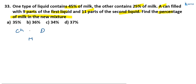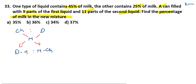Now, if you want the ratio between cheaper and dearer, that is: (dearer minus mean) is to (mean minus cheaper). This is because dearer must be more than mean. This is the ratio between cheaper and dearer — this is the concept of allegation and mixes.